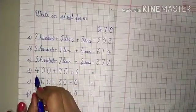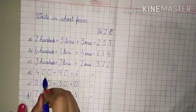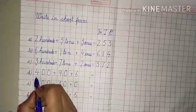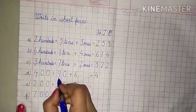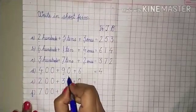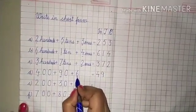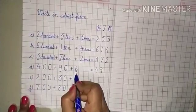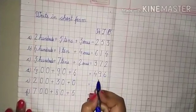Now the next — read the number: four hundred. Hundreds is the place of four, so we will write four here under the heading of H. Now the next number: ninety — it means nine tens. Nine will come here. Next, six — six ones, only one digit, that's why it is ones. Six will come here. Four hundred ninety-six.